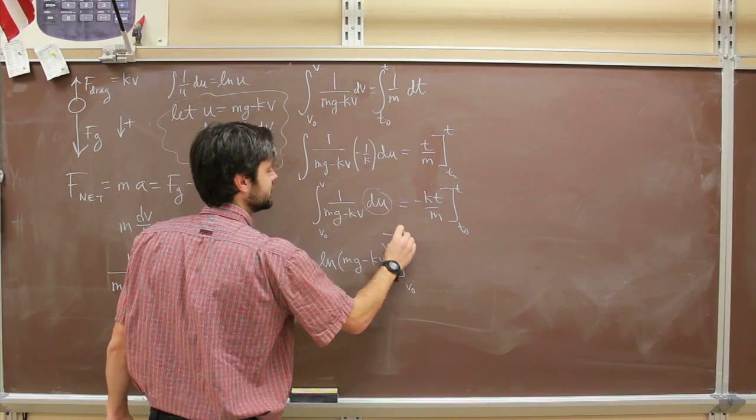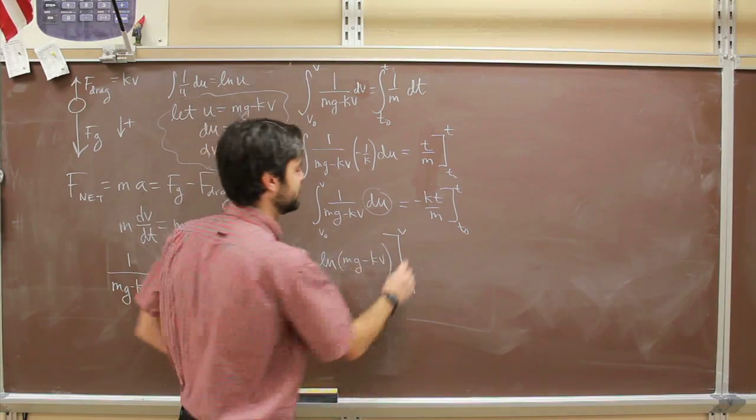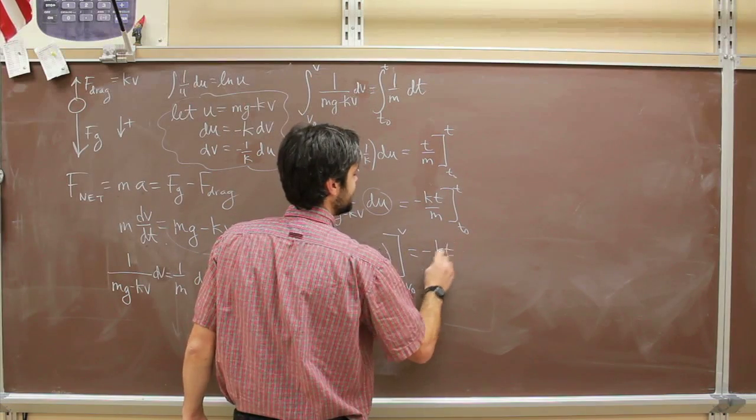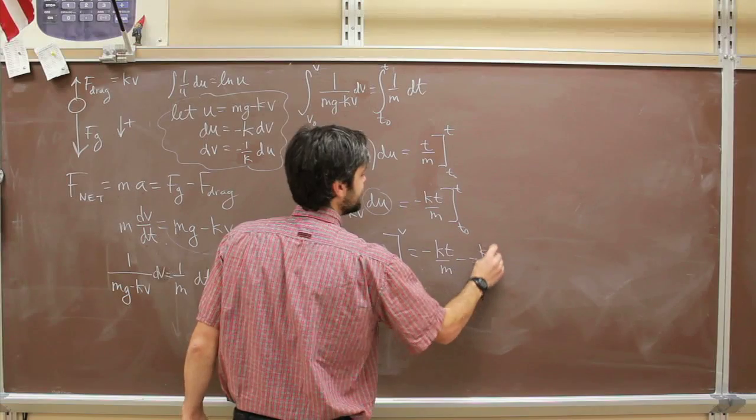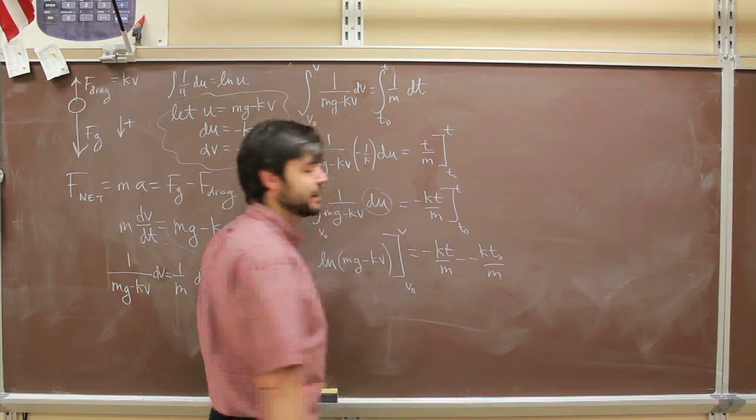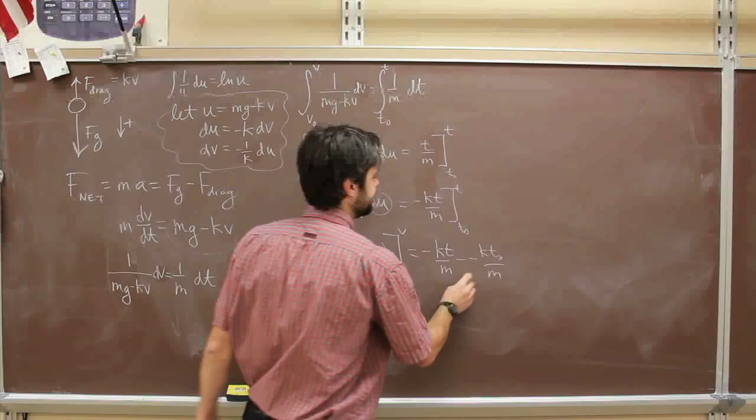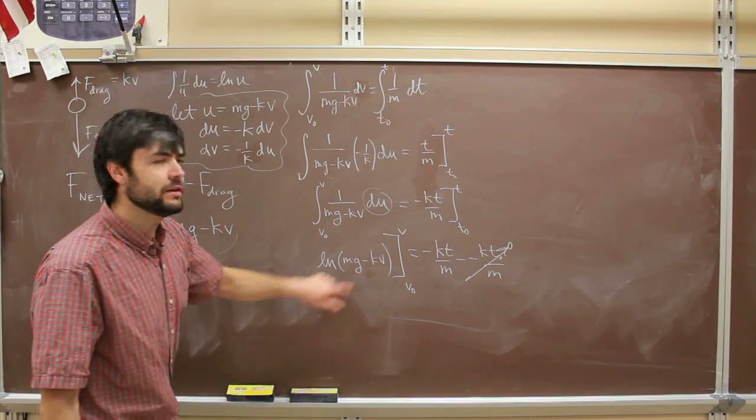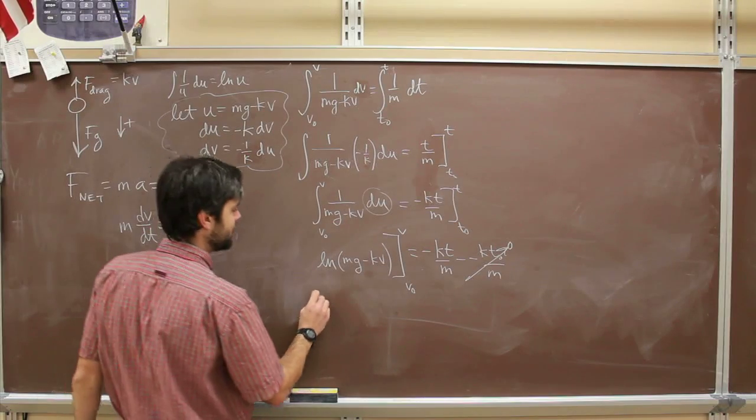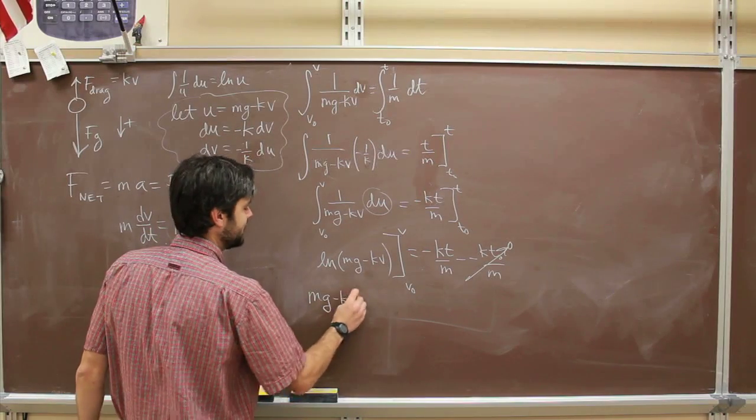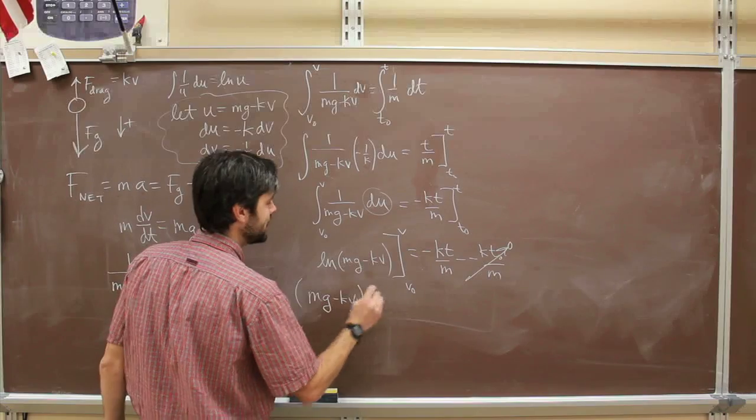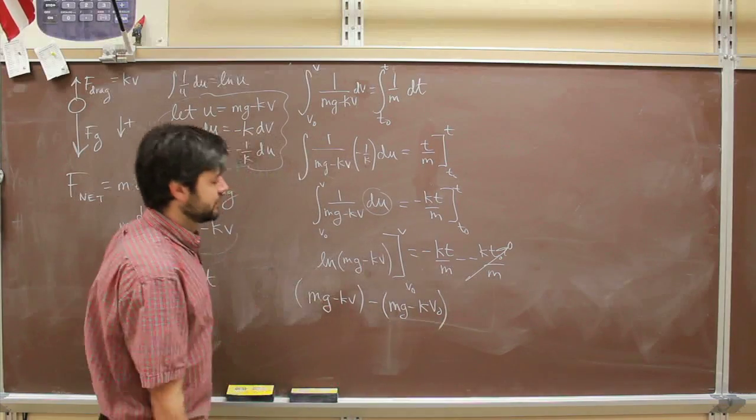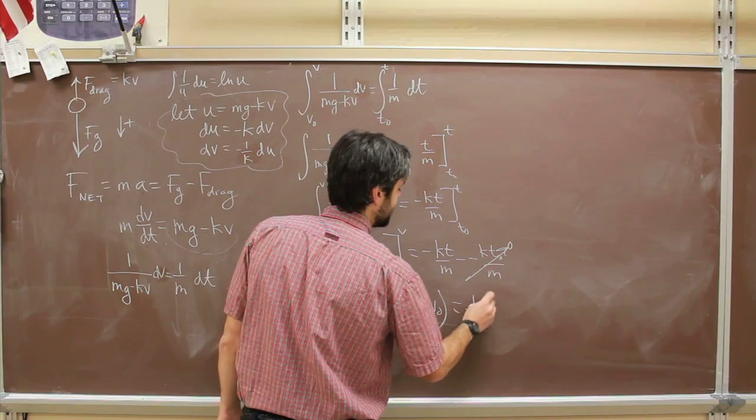We are doing this from initial to final. Now let's do the initial to final, or final to initial on this one. That's going to be minus kt over m minus a minus kt initial over m. Let's say this problem starts at time 0. That makes this easy. That drops out. Okay, and then on this side, we have to do the same thing. So that becomes mg minus kv quantity minus mg minus kv naught on this side is equal to minus kt over m.